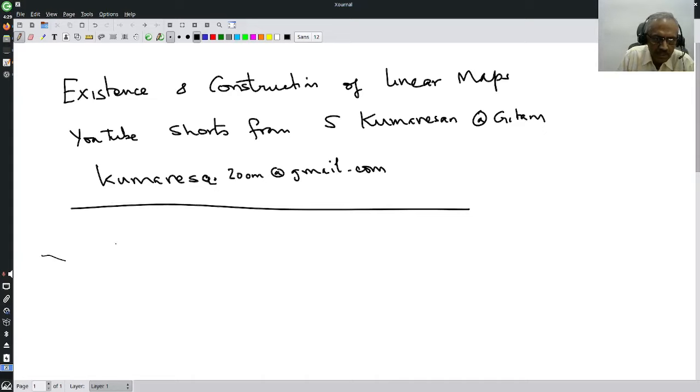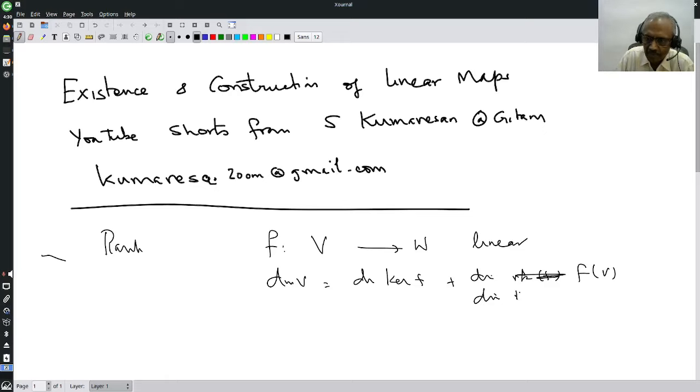Let us recall the rank-nullity theorem. If F is from V to W, linear, these are vector spaces, then dimension of V equals dimension of kernel of F plus dimension of rank of F, which is same as dimension of range of F, F of V, right?